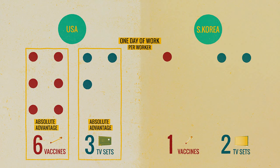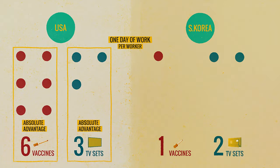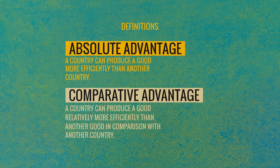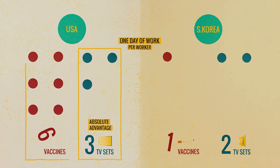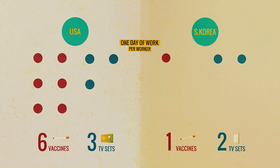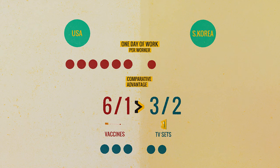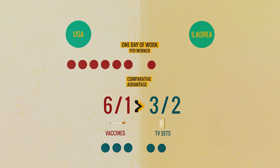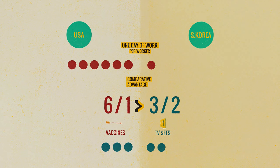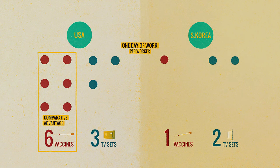Let's consider which country has the comparative advantage in which good. We need to consider that table carefully. The U.S. has an absolute advantage over Korea in both vaccine and TV sets — six is greater than one, and three is greater than two. We say the U.S. has a comparative advantage in producing vaccines because six over one is greater than three over two. The U.S. capability in pharmaceuticals is six times greater than Korea's, but only 50% — three over two times — greater in TV sets. A country cannot have a comparative advantage in both goods, so by definition, Korea must have a comparative advantage in TV sets.